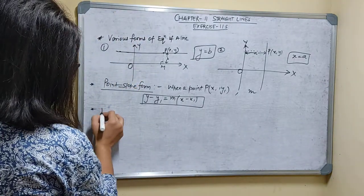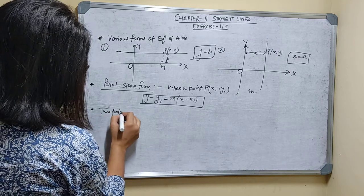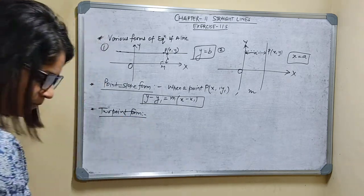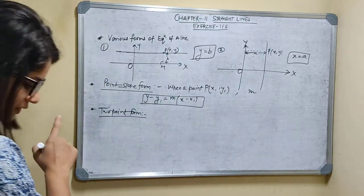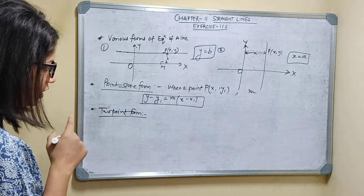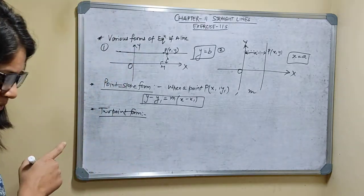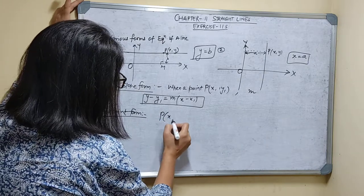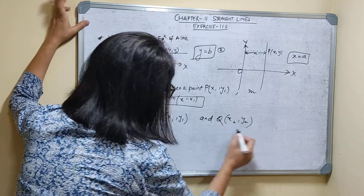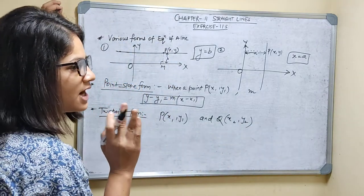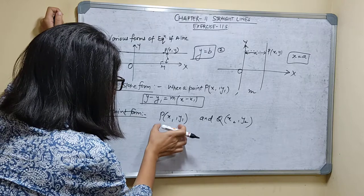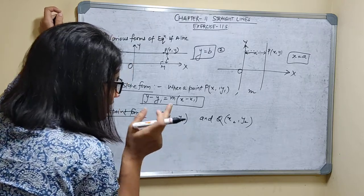Two Point Form: Here, in point slope form, one point and one slope are given. In two point form, we find the equation of a straight line — which must be a non-vertical straight line — passing through two fixed points.